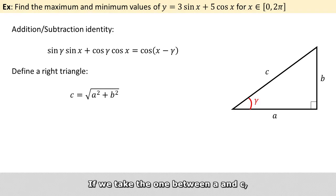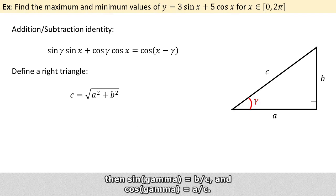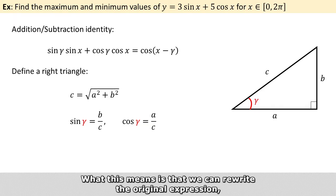If we take the one between a and c, then sin gamma will be b over c, and cos gamma will be a over c. What this means is that we can rewrite the original expression,